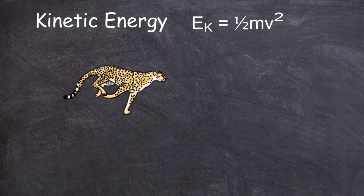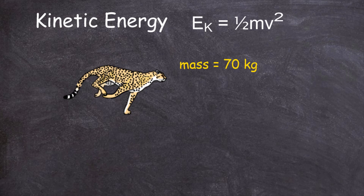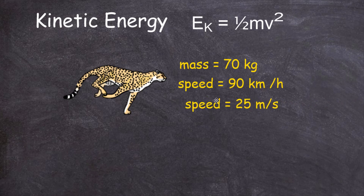Let's take a couple of examples of how to calculate the kinetic energy of a moving object. Let's look at a cheetah — one of the fastest moving animals on the planet. It has a mass of 70 kilograms and can run at almost 120 kilometres per hour. We'll take the speed to be 90 kilometres per hour, but we can't use that directly — we must convert it to metres per second, which gives us 25 metres per second. So here's this cheetah with a mass of 70 kg running at 25 m/s.